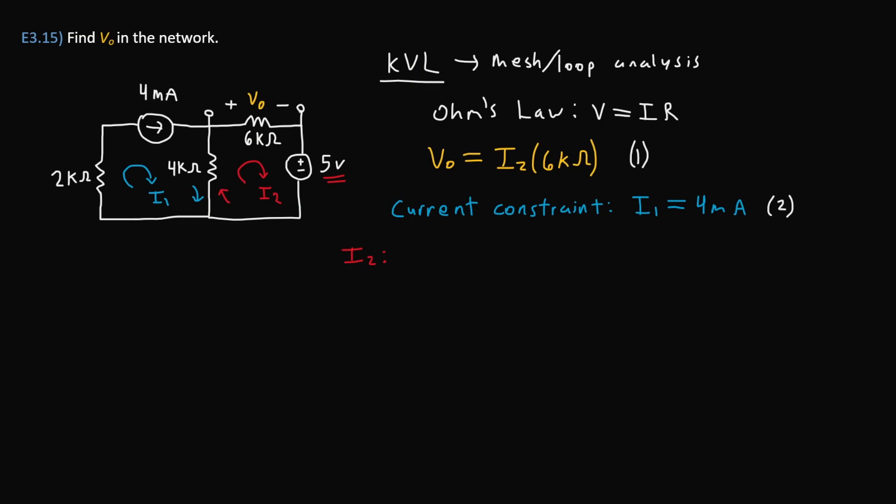Writing out the KVL equation using the Ohm's law principle, we have I₂, then minus the I₁, since it's going in the opposite direction of I₂. Again, voltage is equal to current times resistance. So we need to multiply this current difference times the resistance of the resistor, which is 4 kilo ohms. That's the expression for this first element.